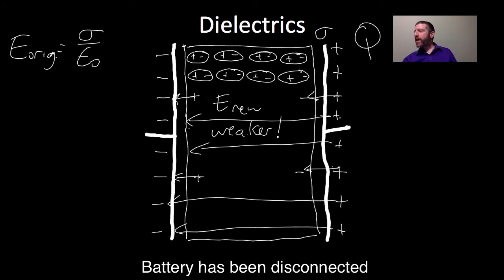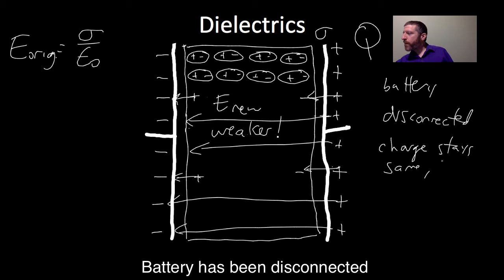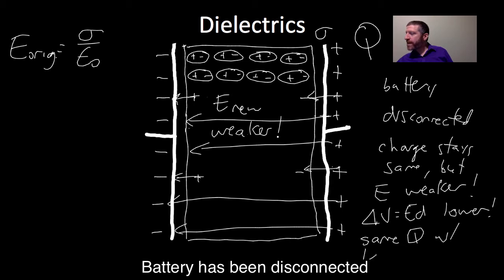I should have mentioned this in the beginning, but the battery is disconnected in this situation. And that means that the charge cannot escape. But what we're getting here is we're getting the same amount of charge. Charge stays same. But field is weaker. And that means delta V, which equals E times d, is lower. Which means we get the same amount of charge Q, but with less delta V. Same Q with less delta V. So that actually makes our capacitor stronger, a bigger capacitance.